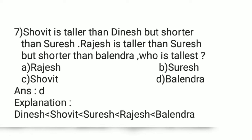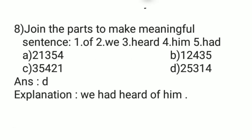Question Number 7: Sita is taller than Dinesh but shorter than Suresh. Rajesh is taller than Suresh but shorter than Bolendra. Who is tallest? The order from tallest to shortest is: Bolendra, Rajesh, Suresh, Sita, Dinesh. So Bolendra is the tallest, and the answer is Bolendra.